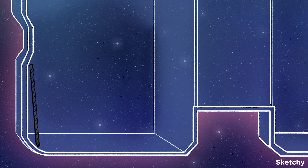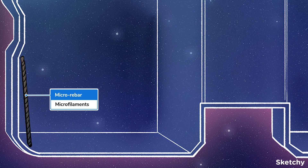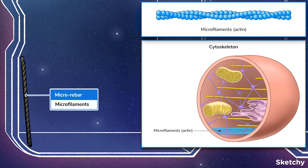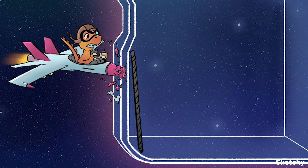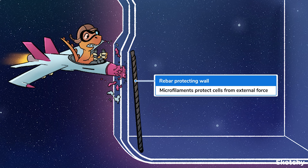We've represented microfilaments with thin rods of rebar reinforcing the space station. Microfilaments are made up of polymerized chains of the protein actin. These structures resemble rods and are solid all the way through, sort of like these micro rods of rebar. Most microfilaments are found near the plasma membrane, where protection from external forces is most needed. Microfilaments are super strong — they protect cells from physical force because they're extremely difficult to compress or break, making them the perfect structure to reinforce the cell membrane.